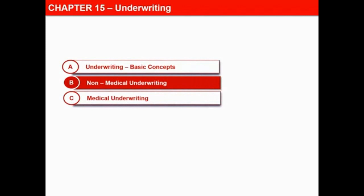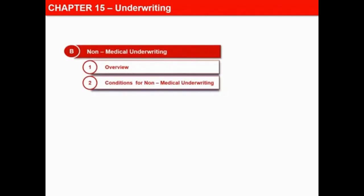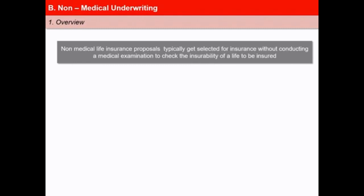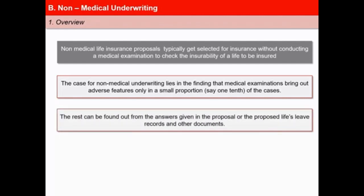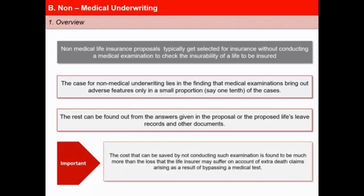In this next video of the lesson, we will discuss about various aspects of non-medical underwriting. Non-medical life insurance proposals typically get selected for insurance without conducting any medical examination. The case for non-medical underwriting lies in the finding that medical examinations bring out adverse features but in a very small proportion — say one-tenth of cases. The cost saved by skipping such examinations is much more than the loss a life insurer may suffer on account of extra death claims arising as a result of bypassing a medical test.